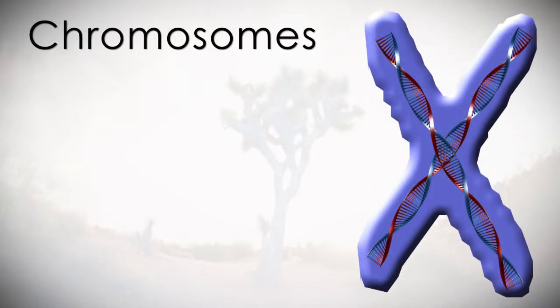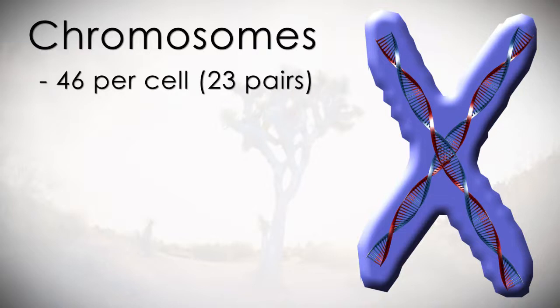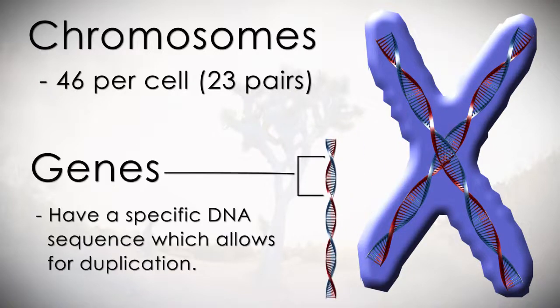When the cell is ready to divide, the chromatin will form into rod-shaped structures called chromosomes. There are 46 total chromosomes in each cell. Chromosomes contain genes, which have a specific DNA sequence that allows for duplication.